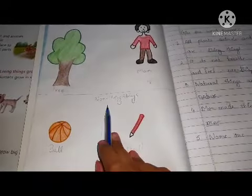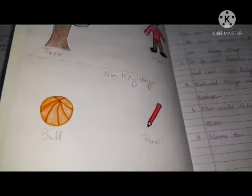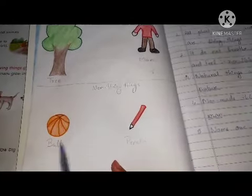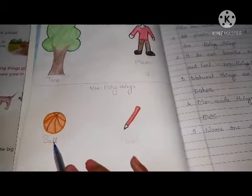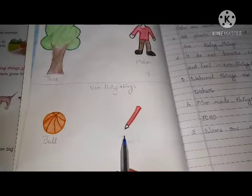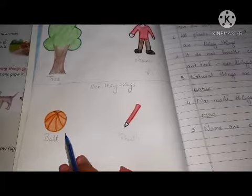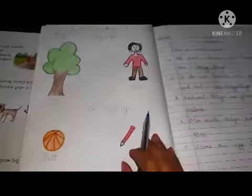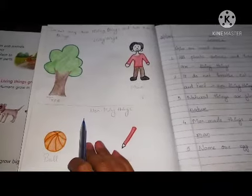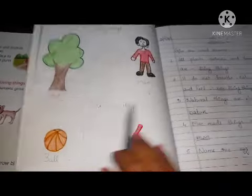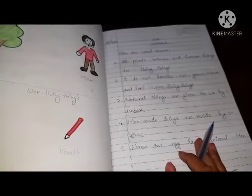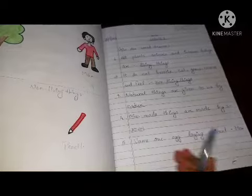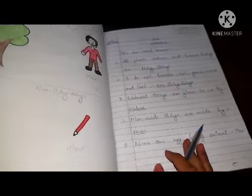Then the second one is non-living things. You have to draw any two non-living things. I made ball and pencil. So koi bhi aapko do non-living things make karna hai. You have to draw these four diagrams in your left side of your science copy. And this give one word answer you have to do in the right side of your science copy. And learn it also. Thank you, class.